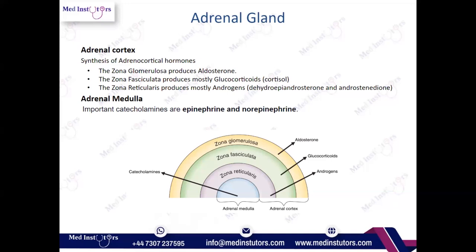The outermost layer of the adrenal cortex is the zona glomerulosa. As its name indicates, glomerulosa is related to the glomerulus, which is part of the nephron in the kidney. So this layer secretes a hormone that affects the kidneys, and that hormone is aldosterone. If you get a question asking which hormone is created by the zona glomerulosa, the answer is aldosterone, because glomerulosa relates to the kidneys.